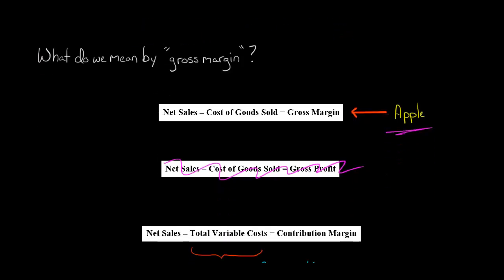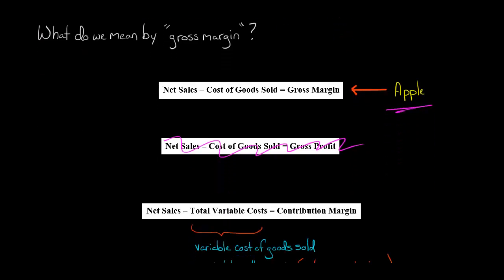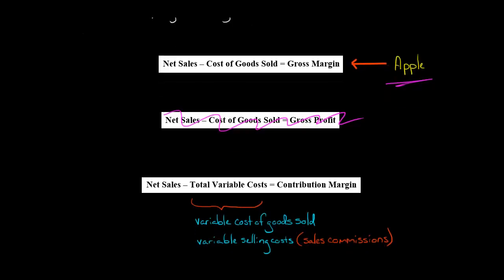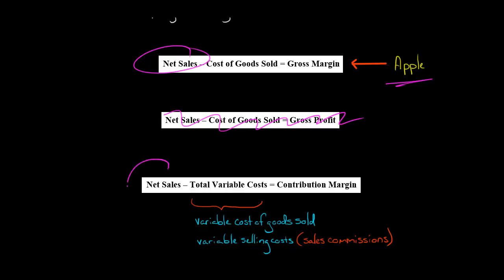Now, what is contribution margin? Contribution margin is a company's net sales minus its total variable costs. So with both contribution margin and gross margin, we're starting with net sales — but then we're subtracting something different. With gross margin, we're subtracting cost of goods sold, and with contribution margin, we are subtracting total variable costs.